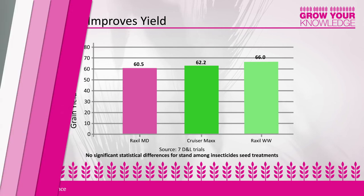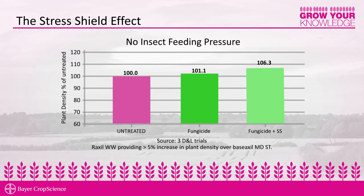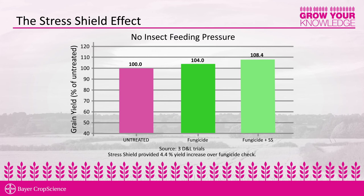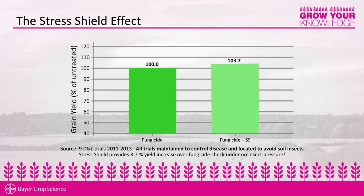So why do we get an increase in yield with Stress Shield versus other neonic insecticides? We can observe the Stress Shield benefit in non-wireworm situations where we see a higher yield response from the Stress Shield-treated crop versus the fungicide-only treated crop. This is the added protection that Stress Shield is able to provide.